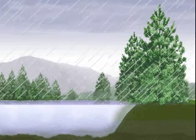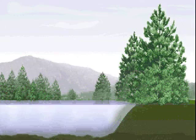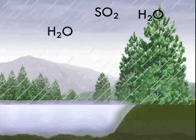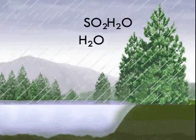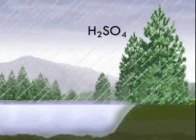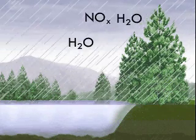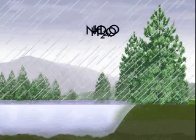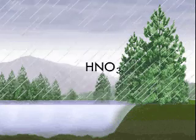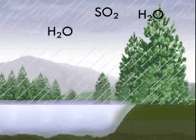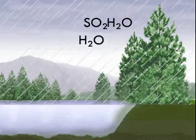Acid rain has a pH below 5.6. It results from sulfur dioxide gas and gases of nitrogen oxides reacting with water vapor to form sulfuric acid and nitric acid respectively.